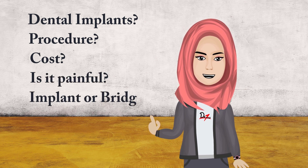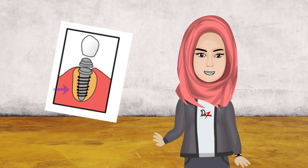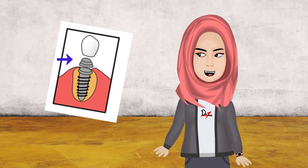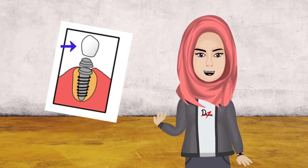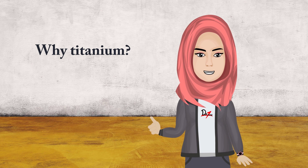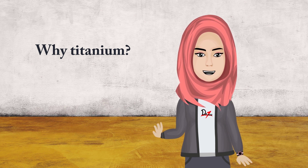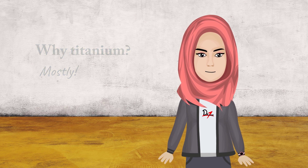First, let's understand what is a dental implant. It is a screw-like device, usually made up of titanium, which fixes into your bone, and on top of it an artificial crown or tooth is placed. This is a permanent and fixed treatment. Titanium is used because it is a noble metal — it is biocompatible, meaning it does not harm your body. The body does not reject it, and it fixes into the bone really well without any infection or complication.